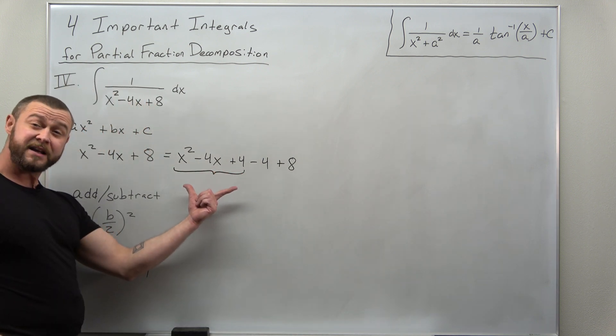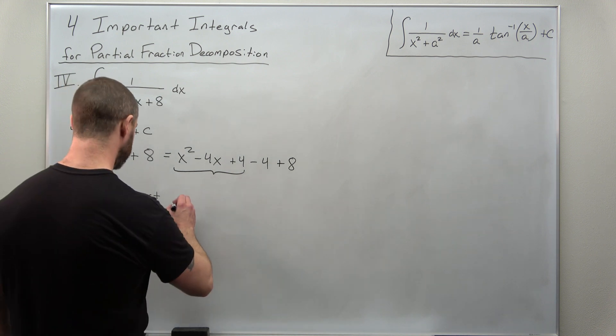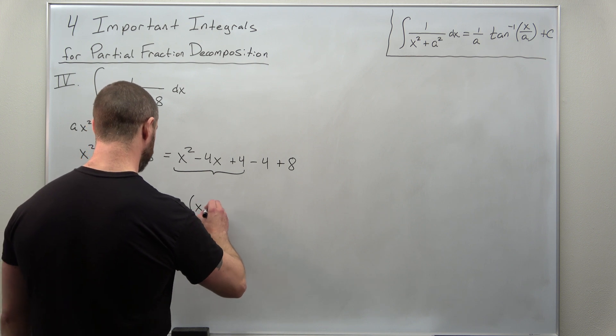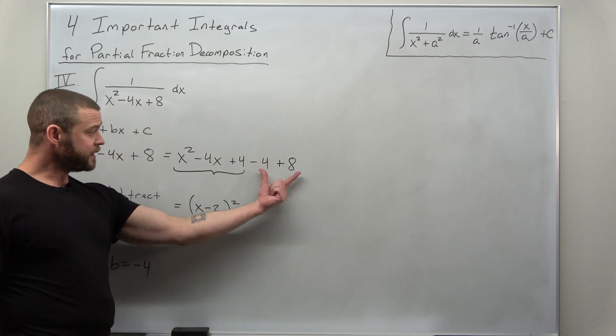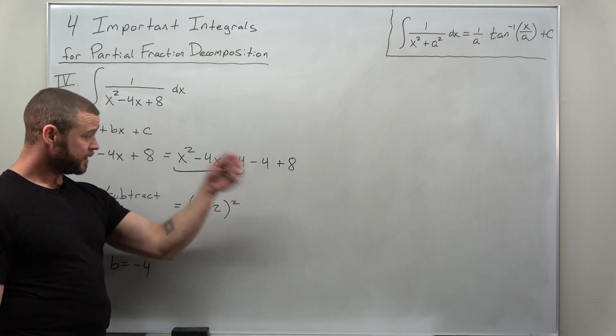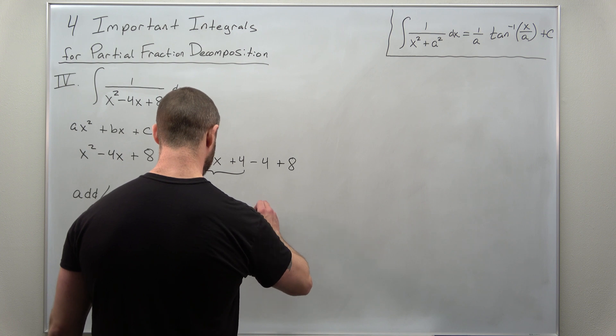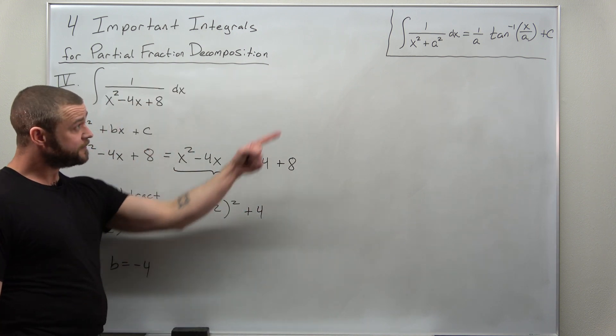And what you should find is that these three terms in the front factor as a perfect square. And it looks like we can write that as (x minus 2) squared. And then the remaining numbers, we just combine them, that's a little complicated. I think we get positive 4. And from here, it looks very similar to our inverse tangent integration formula. Now, let's just make use of that.